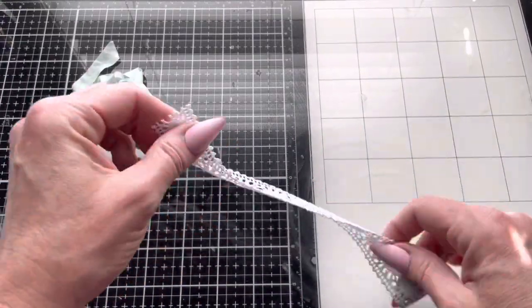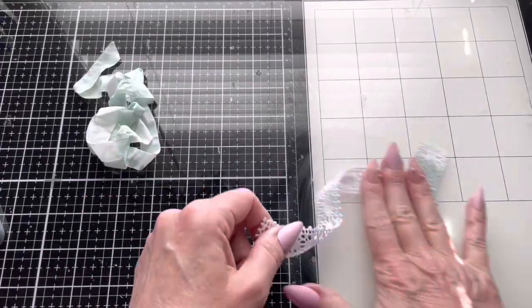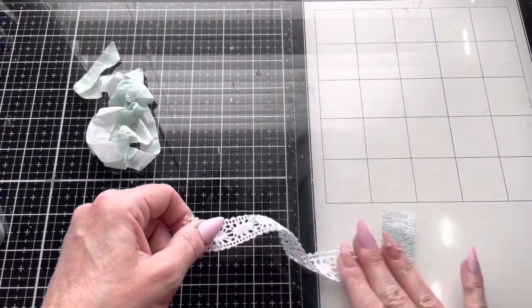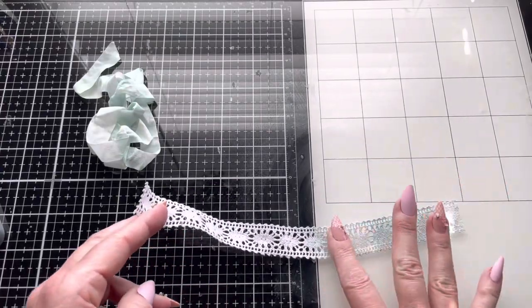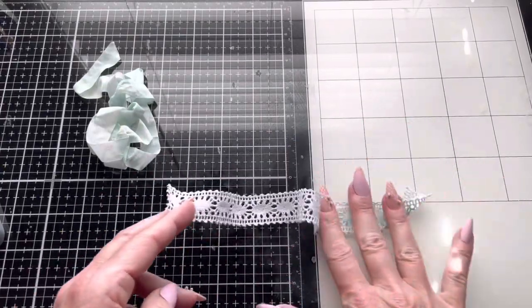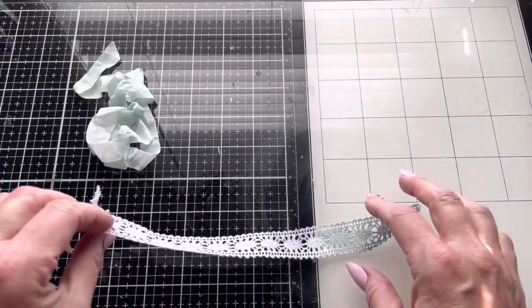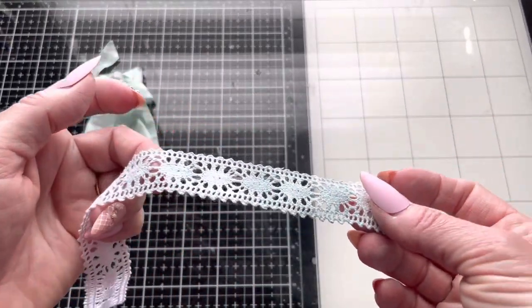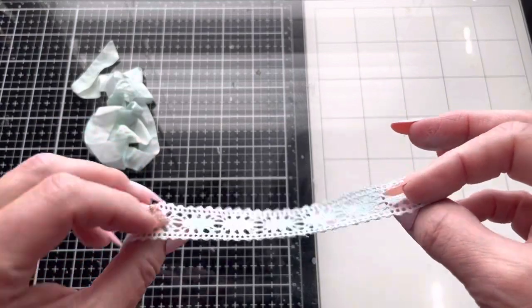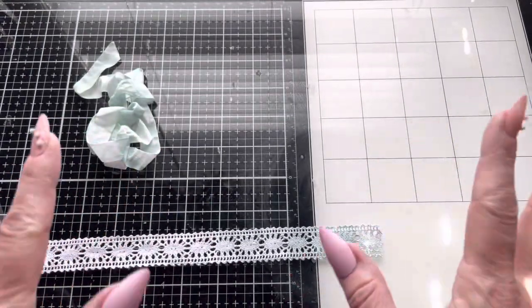You do want to use a non-porous surface to do this on—that's why I got out this. You definitely want a non-porous surface. Now you can see the color coming up on the lace, and you just keep repeating that until you get what you want.